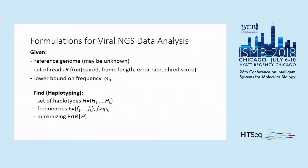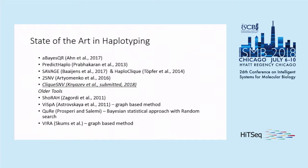Given a reference genome — which may be unknown, though that's not critically important — and a set of reads, and possibly a lower bound on the frequency of the haplotype: all these reads are drawn from a population of different variants. These variants may be as close as one or two SNPs away from each other. Basically, it's the same as identifying repeats or genes. We want to find a set of haplotypes along with their frequencies that maximize the probability of seeing the observed reads given that set of haplotypes.